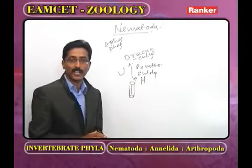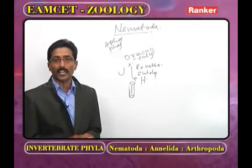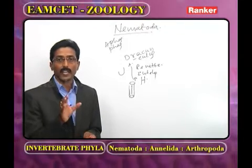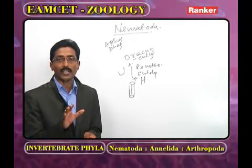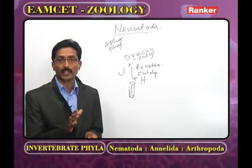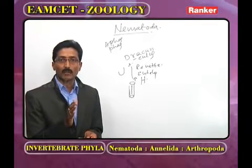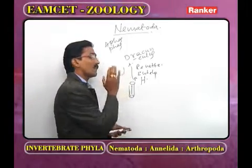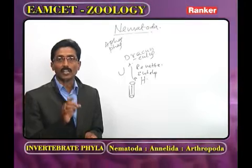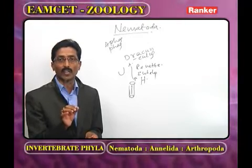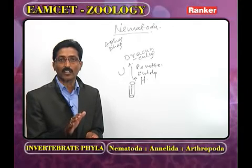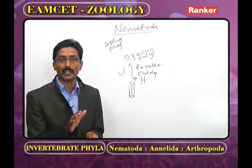Regarding the body organization in Nematoda: it is not complicated because the mesoderm — muscles and connective tissue — is completely confined to the body wall. As for the alimentary canal, only the pharynx is muscular and the remaining part is non-muscular, so the alimentary canal does not perform any peristaltic movements.